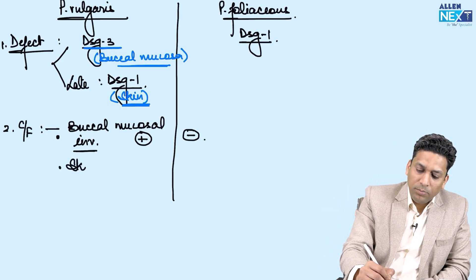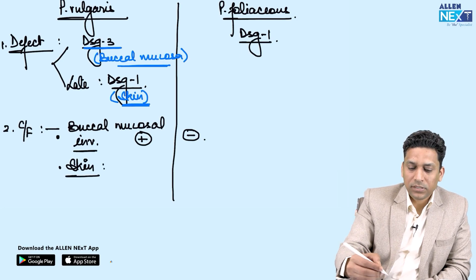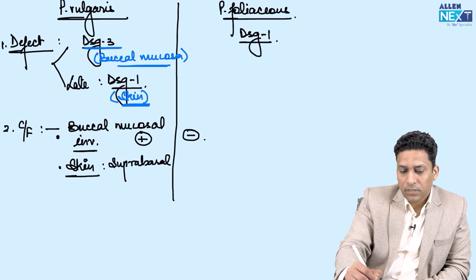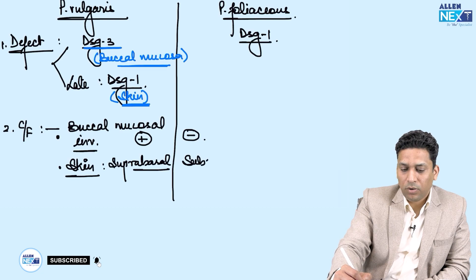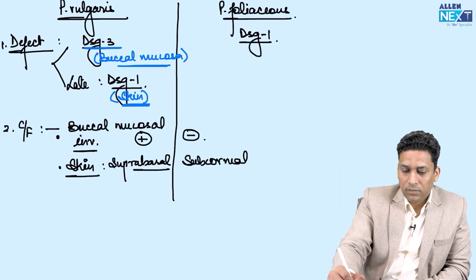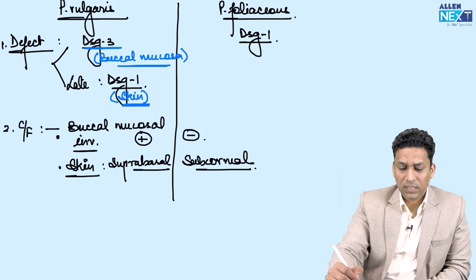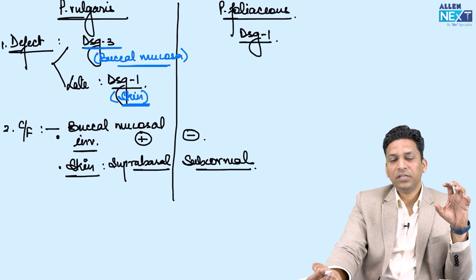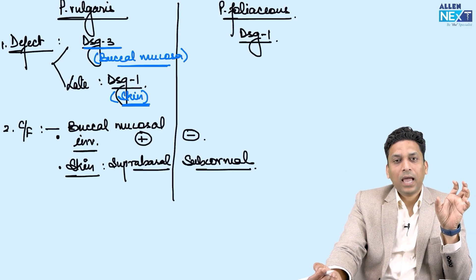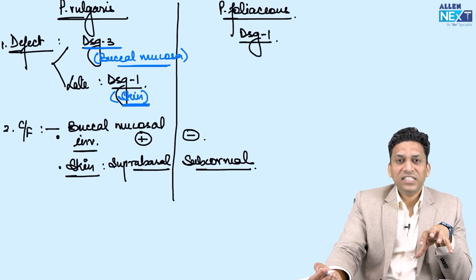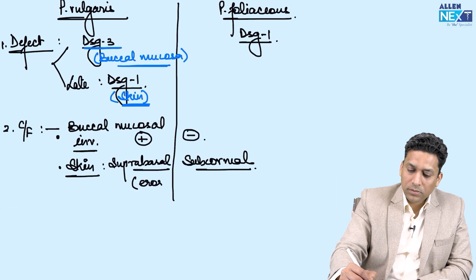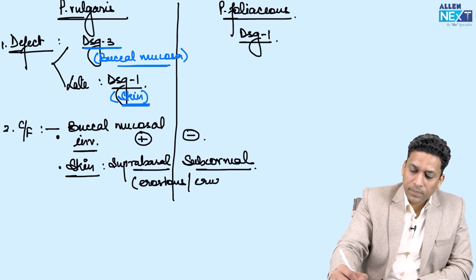Skin can be involved in both and over the skin you will get blisters. These are suprabasal in cases of vulgaris but subcorneal in cases of foliaceus. Both are intraepidermal — within the epidermis — and since epidermis is the most superficial layer, these blisters can very easily rupture, forming erosions with crusting later in the disease.